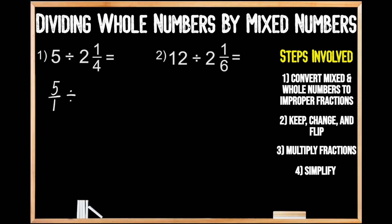Now we're going to convert our mixed number into an improper fraction. To do this, we're going to start by multiplying the value of our denominator by the value of our whole number. When we multiply four times two, we get eight, and then we're going to add on our remaining numerator. When we add eight plus one, we get nine, for nine-fourths.